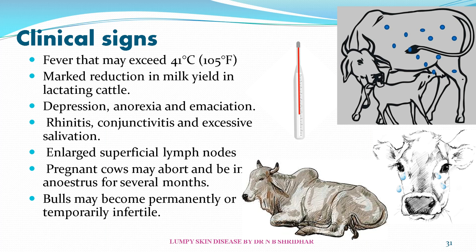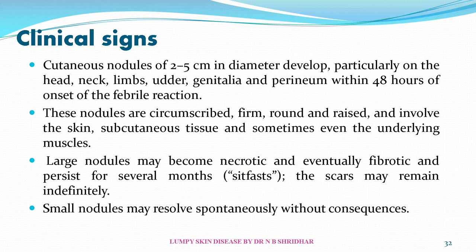Clinical signs of this disease initially include high fever, which may exceed 105 degrees Fahrenheit. There is a marked reduction in milk yield, especially in milking cattle. Sudden depression, anorexia, emaciation, rhinitis, conjunctivitis, and excessive salivation also occur. Enlarged superficial lymph nodes are seen, pregnant cows may abort, and bulls may become permanently or temporarily infertile. Cutaneous nodules of 2 to 5 cm diameter develop particularly on the head, neck, limbs, udder, genitalia, and perineum within 48 hours of onset of the febrile condition.